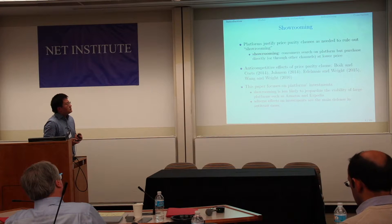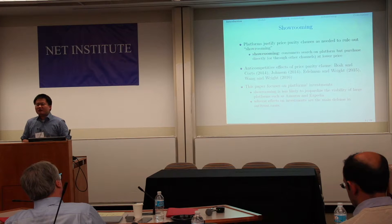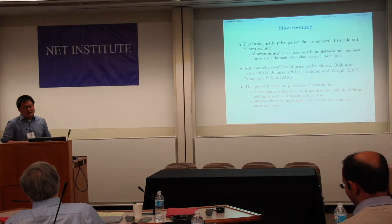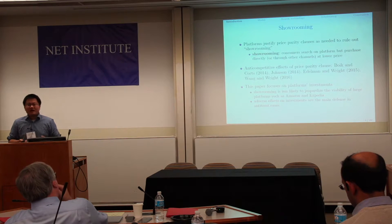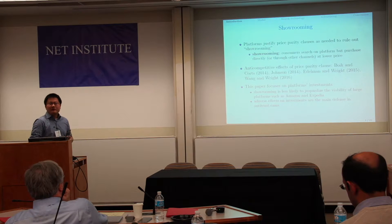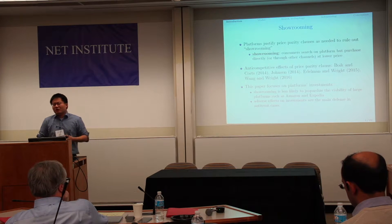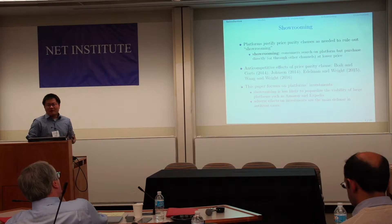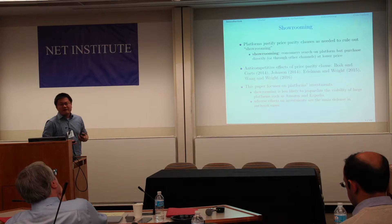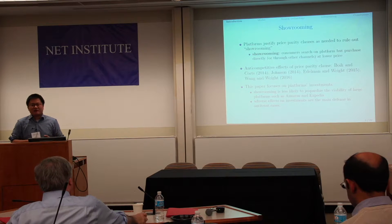In this paper, the focus is different from the last one. The previous paper looked at the viability of the platform — if showrooming is severe and the platform has a high fixed cost, it can no longer operate. But we thought this is not a big problem for giant platforms such as Amazon or Booking.com. Even with showrooming, it is less likely they stop operating, but it will have a significant effect on their investment. That is what we look at in this paper.